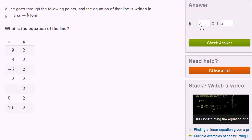You could substitute back in. If y equals 0x plus b, that means that y equals b. Well, y is always equal to 2 no matter what point you pick. So b equals 2. So either way, this just boils down to y equals 0x plus 2, or y equals 2. Let's do another one of these.